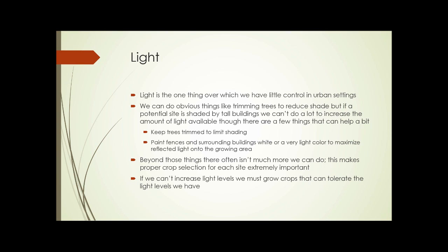This makes proper crop selection for each site extremely important. If we can't increase light levels, we need to grow crops that can tolerate the light levels that we have. It's easy enough to look up particular crops and their required light levels, and plan your urban agriculture project around those things that will do well under the conditions you have. Most leaf crops — lettuces, arugula, spinach — can do fairly well, even very well, in quite low light. Other crops such as sweet corn need a lot of light, so proper crop selection based on the amount of light as well as other conditions is extremely important. That concludes the presentation for unit eight.